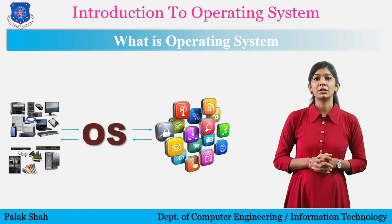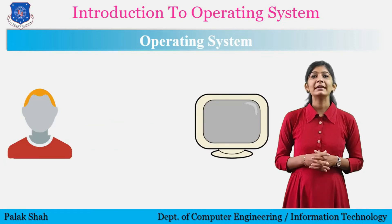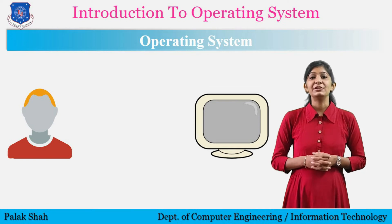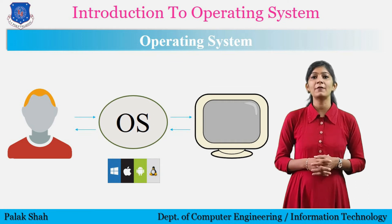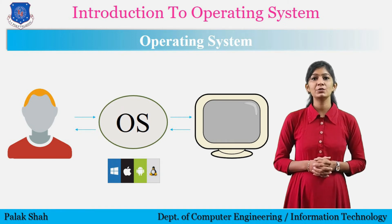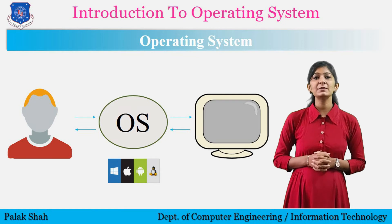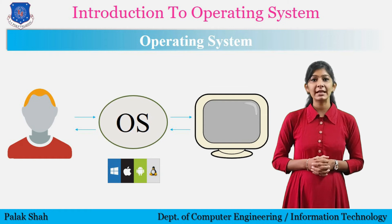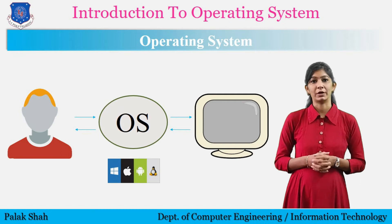The operating system is the backbone of the computer which manages both software and hardware resources. It is a program that acts as an interface between the user and the computer hardware, and controls the execution of all kinds of programs. The operating system helps the user to communicate with the computer. It is not possible for users to use any computer or mobile device without having an operating system. Operating systems are responsible for everything from the control and allocation of memory to recognizing input from external devices and transmitting output to the computer display.